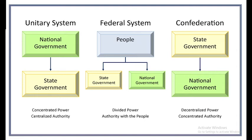When it comes to a federal system, power comes from the people and is distributed equally between the state and the national government. In other words, there is division or distribution of power between the center and states. An example of a federal system is the United States and India.